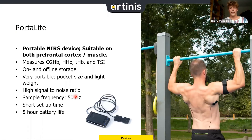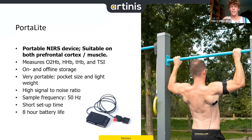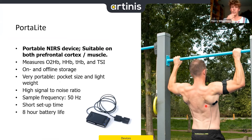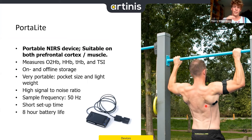The Portalite system is similar to the Portamon — also three transmitters firing to one receiver — but has a flexible probe, making it easier to measure rounder muscles. It can also measure the prefrontal cortex since it fits the slightly curved forehead area. It has a higher sample frequency of 50 Hz compared to the Portamon, though for typical oxy, deoxy, and TSI changes this higher frequency is not always necessary.